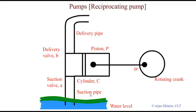The suction pipe connects the source of the fluid and the cylinder. A is the suction check valve that admits the flow only to the cylinder. B is the delivery check valve that admits the flow from cylinder to the delivery pipe.